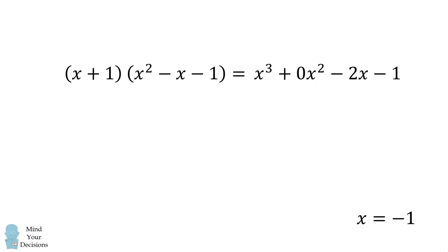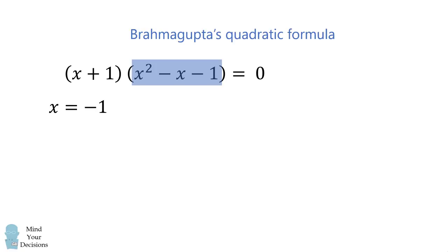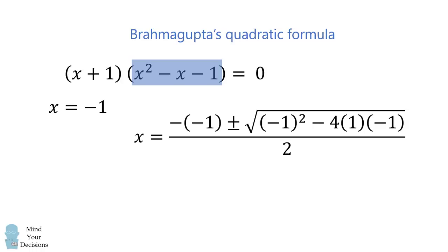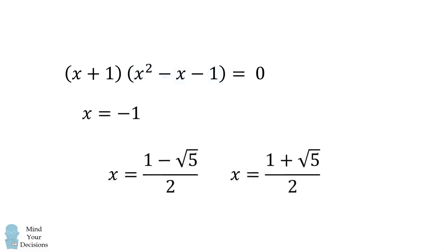To find the roots of the cubic equation, we find the roots of the linear factor multiplied by the quadratic factor. We already have the linear factor leading to the root x equals negative 1. We thus need to solve for the roots of the quadratic equation x squared minus x minus 1 equals 0. We can do that with Brahmagupta's quadratic formula. Substituting in the values and simplifying, we get x equals 1 minus the square root of 5 all over 2, and x equals 1 plus the square root of 5 all over 2, which is also known as the golden ratio.